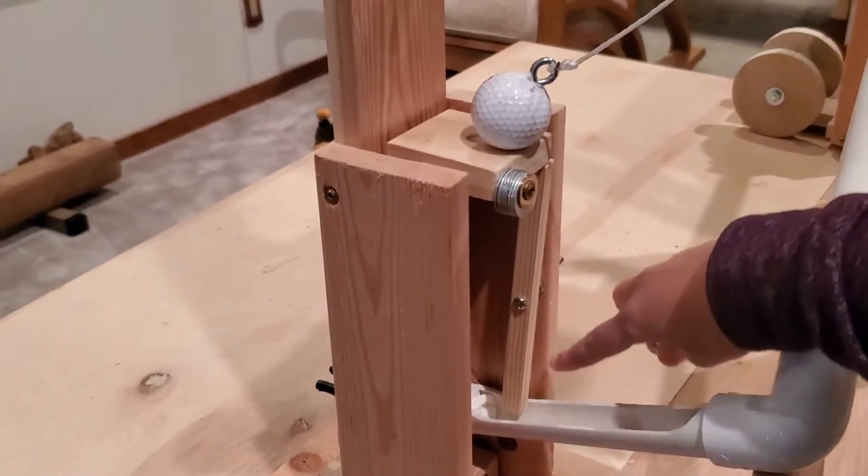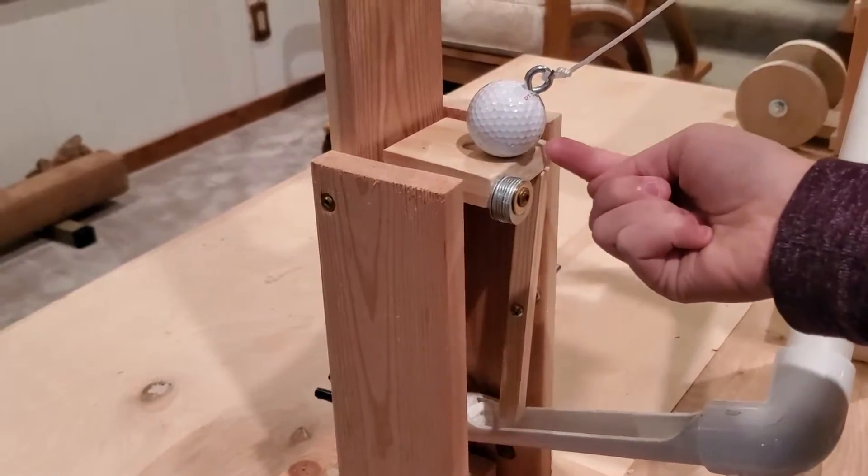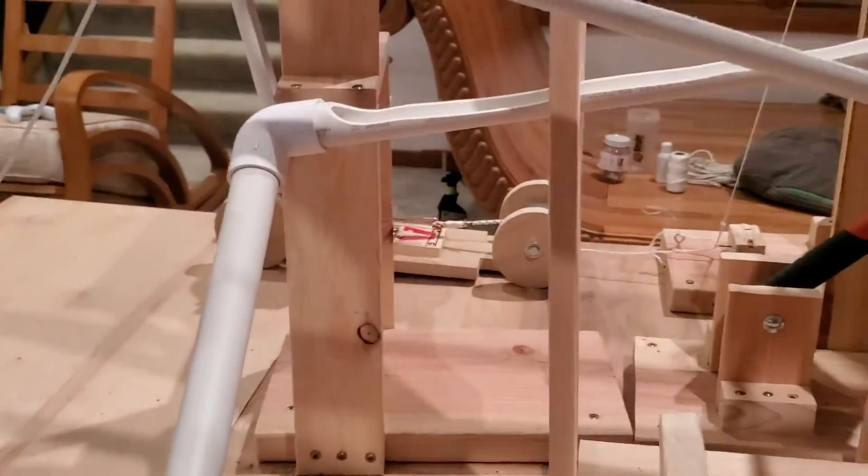Push this wood lever off of here, which makes the trapdoor fall down, which makes the golf ball swing forward and hit these.